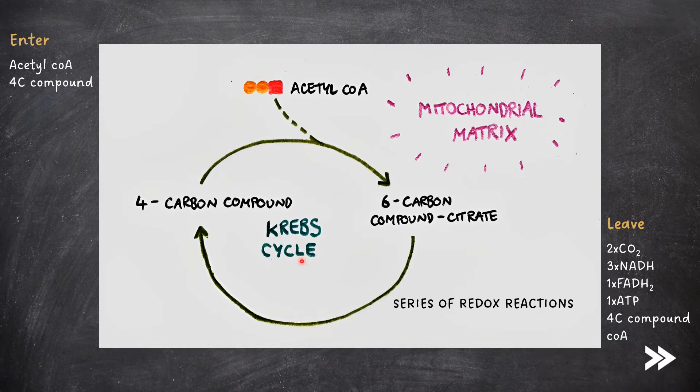Next we have the Krebs cycle, which, like the link reaction, also occurs in the mitochondrial matrix. First, acetyl coenzyme A reacts with a 4-carbon compound to produce a 6-carbon compound citrate. A series of redox reactions in the matrix then produces two CO2 molecules, three NADH molecules, one FADH2 molecule, and one ATP molecule. In this process, the 4-carbon compound is regenerated, as is coenzyme A, which returns to the link reaction to react with a 2-carbon acetate again.